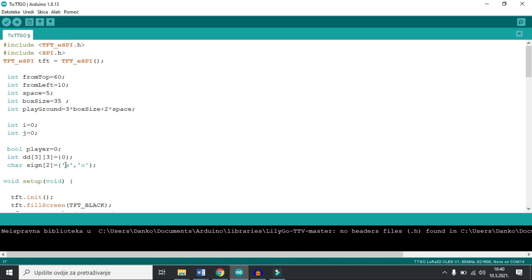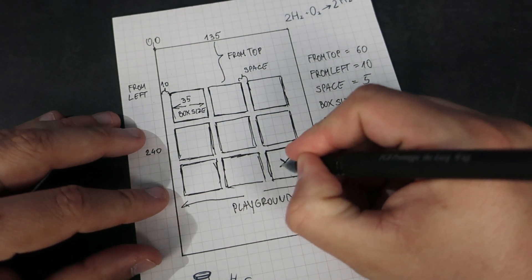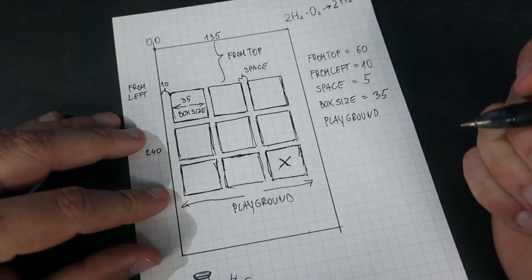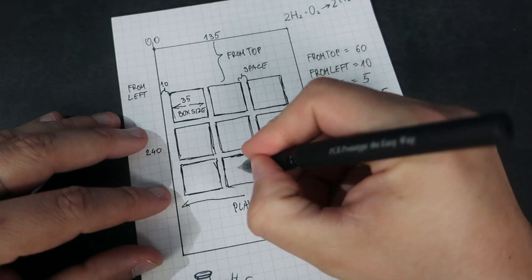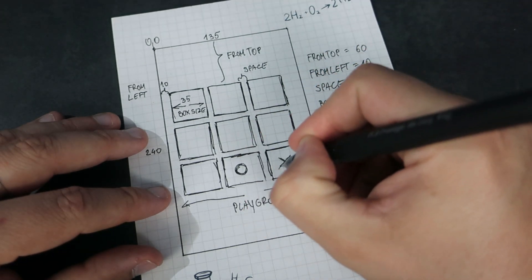Here is the array where X and O are stored. If player 0 is playing, it will draw X on the board. If player 1 is playing, it will draw O or circle on the board.